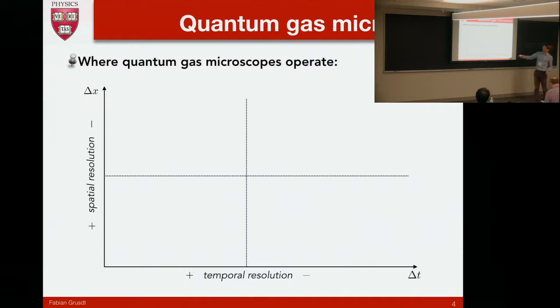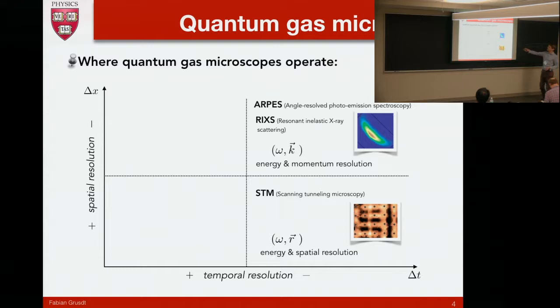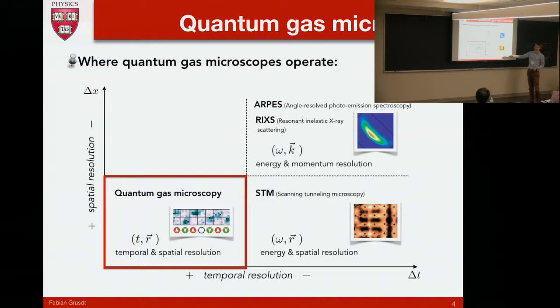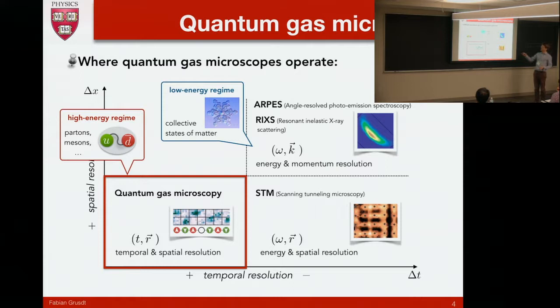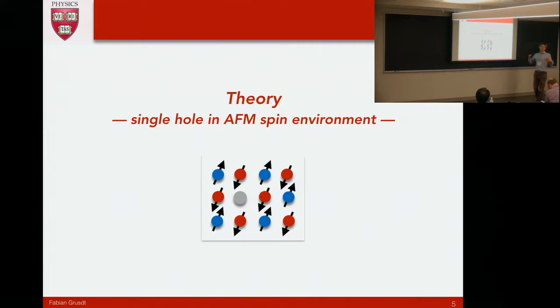This microscopy operates where you can really look at this diagram. This is the temporal resolution that you have, this is spatial resolution. Traditional solid-state experiments work here. ARPES or any spectroscopy means they have frequency and momentum resolution, STM has frequency and spatial resolution. But quantum gas microscopes really work here in the time domain and the spatial domain. That means you can really take instantaneous snapshots of the actual quantum states you see.